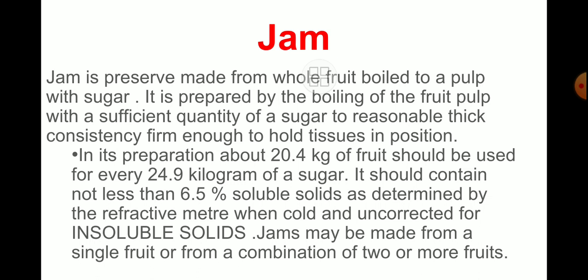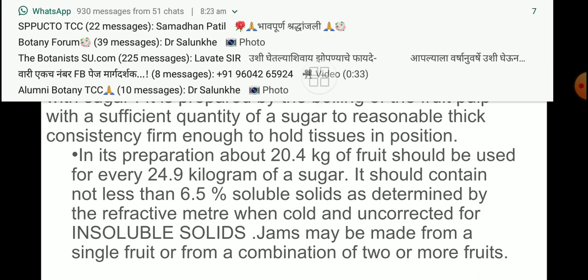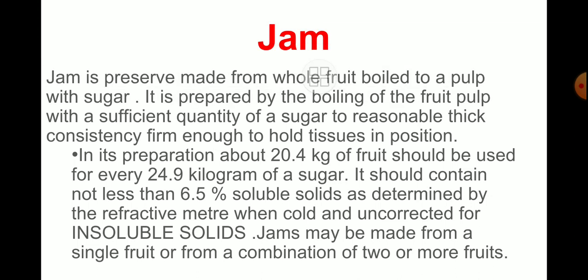In its preparation, about 20.4 kilograms of fruit pulp should be used for every 24.9 kilograms of sugar to be added. It should contain not less than 65 percent of soluble solids as determined by the refractometer when cold and uncorrected for insoluble salts.